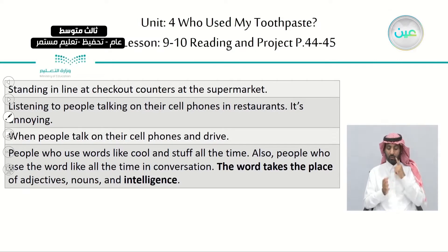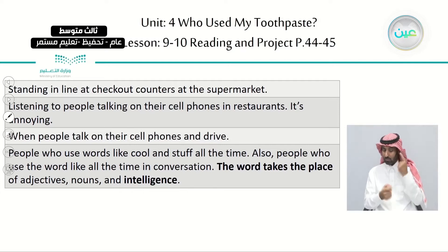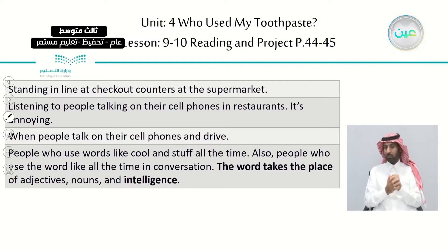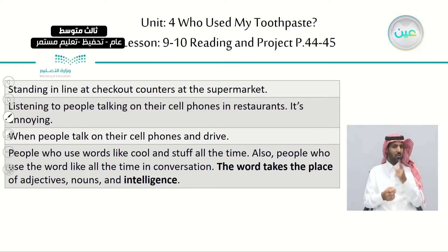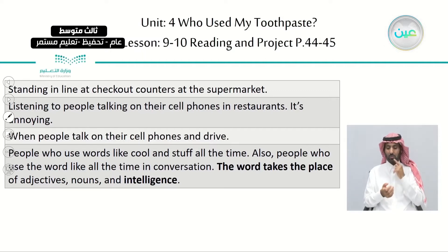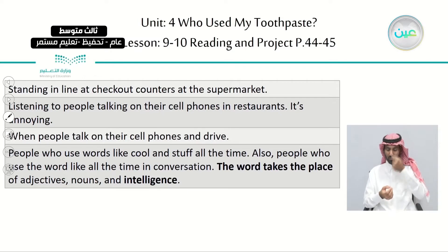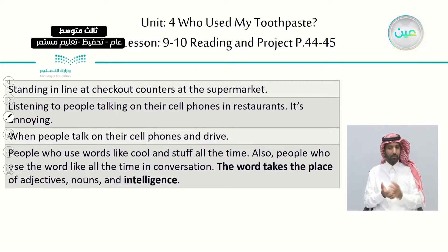Let's read together. 'Standing in line at checkout counters at the supermarket. Listening to people talking on their cell phones in restaurants — it's annoying. When people talk on their cell phones while driving. People who use words like cool and stuff all the time. Also people who use the word like all the time in conversation — the word takes the place of adjectives, nouns, and intelligence.' This is the first part of the list.